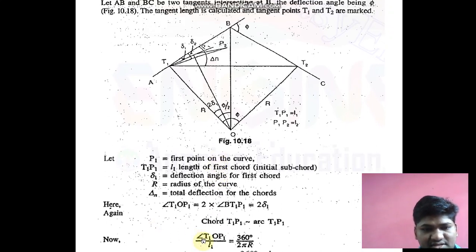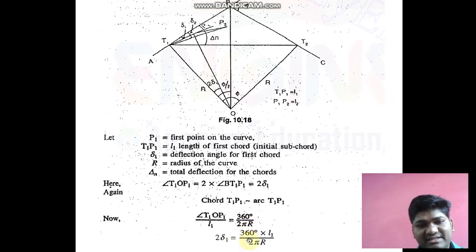Before going further, we should understand the angle of a circle is 360 degrees and 2π is the perimeter of the circle. By considering this rule, in this triangle we say that angle T1OP1 divided by this length should equal 360 divided by 2πr. This is a basic rule of geometry we have already studied.